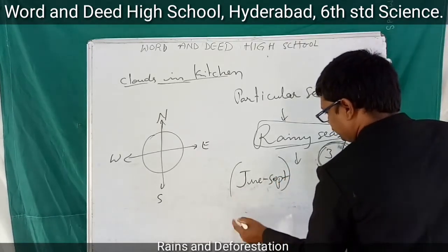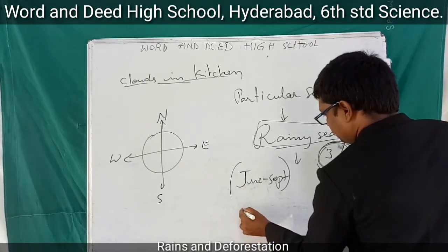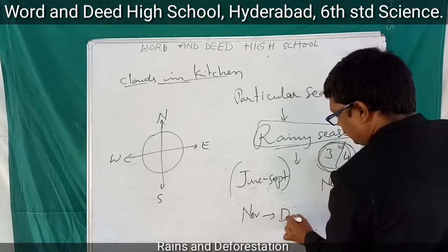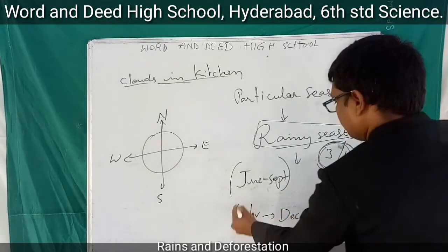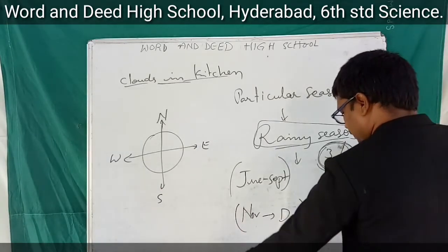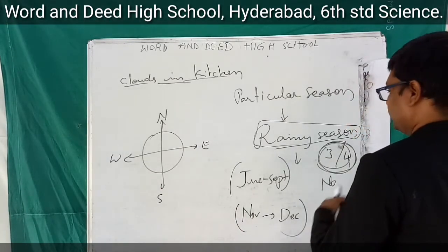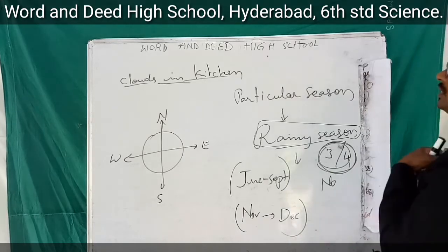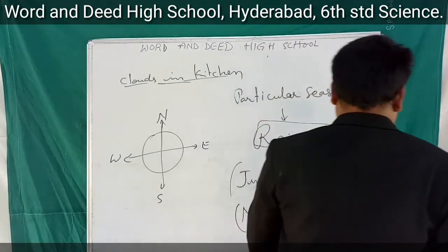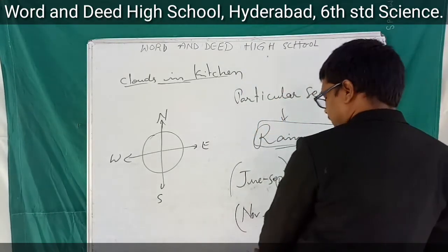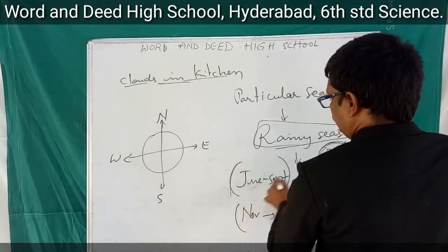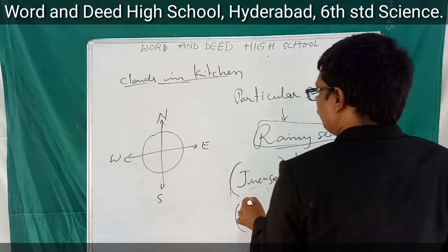We get rains between June to September, and we also get rains during November and December. A natural process takes place — the movement of winds. During June to September, the winds move from south to west.